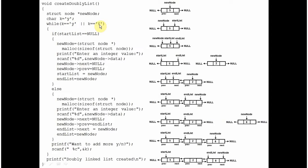Suppose the user presses Y — the loop continues. Is start_list null? No, start_list is now pointing to some node, so the else block will be executed. A new node is created and the user is asked for an integer value — suppose the user enters 2. The next and previous pointers are initialized to null. The next pointer of end_list is set to point at new_node, and the previous pointer of new_node is set to point at end_list, connecting them. After that, end_list is moved to point at new_node so that subsequent nodes will be connected through end_list.